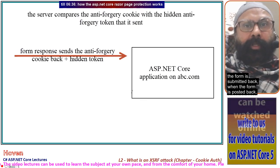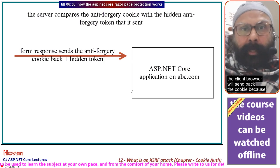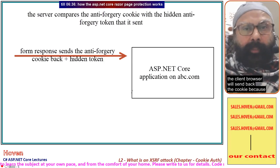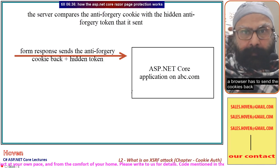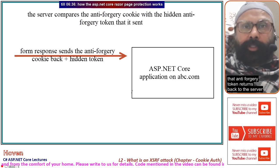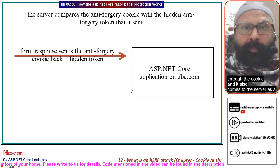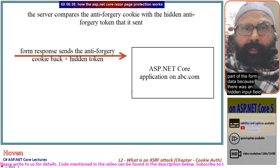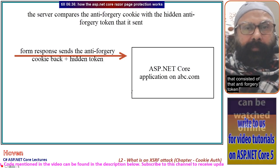When the form is submitted back, the client browser sends back the cookie — because a browser always sends cookies back. The cookie contains the anti-forgery token, which returns to the server through the cookie. It also comes to the server as part of the form data, because there was a hidden input field containing that anti-forgery token.